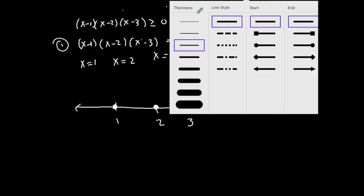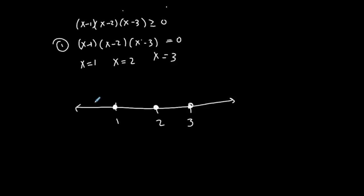To determine which intervals to shade as my solution, I'll pick test points in each interval. For example, 0 is to the left of 1, so it represents the interval to the left of 1. Then 1.5 is between 1 and 2, 2.5 is between 2 and 3, and 4 represents the interval to the right of 3 — whatever is easiest for each interval.